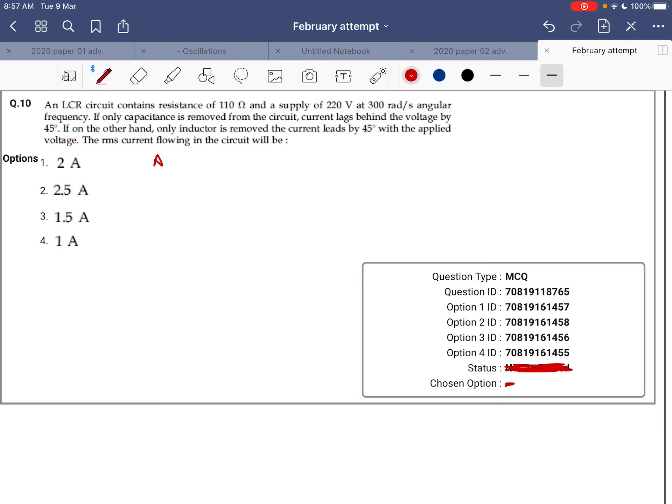This is the tenth example. An LCR circuit contains a resistance of 110 ohms and a supply voltage of 220 volts. When nothing is specified, the supply is assumed to be RMS.